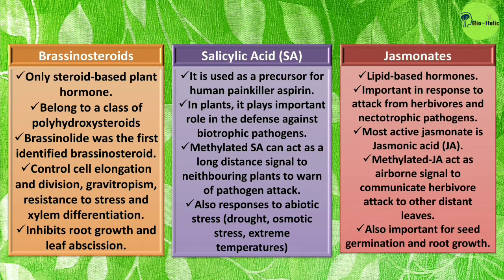Jasmonates are lipid-based hormones important in response to attack from herbivores and necrotrophic pathogens. The most active jasmonate is jasmonic acid. Similarly to salicylic acid, methylated jasmonic acid acts as an airborne signal to communicate herbivore attack to other distant leaves — either of the same plant or of neighboring plants. Jasmonates are also important for seed germination and root growth.